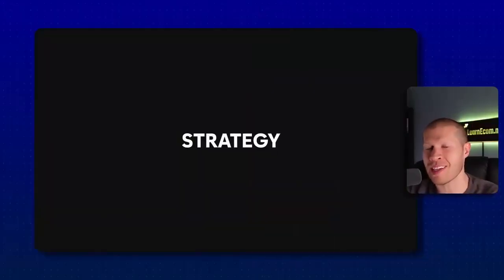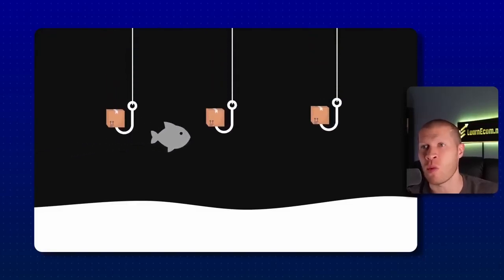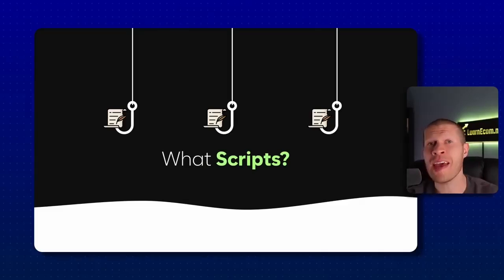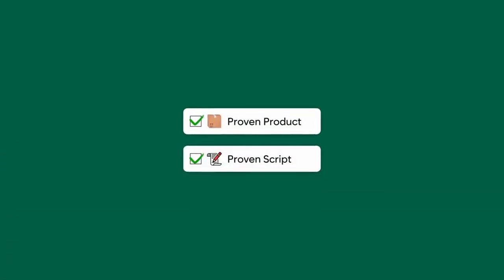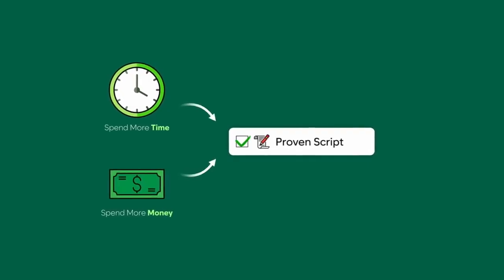It saves so much time, doesn't cost much compared to outsourcing to an editor, and lets you test a lot of products with different video variations very quickly. The whole strategy is throwing in feelers — if you upload a video and get five sales at 2,000–5,000 views, you've got a proven product and a proven script. That's when you want to invest more time and money into creating a better version with better B-roll.